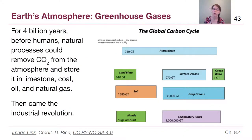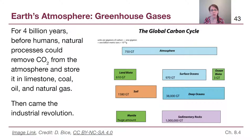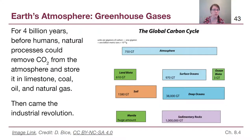For four billion years before humans came along, there were lots of different processes that could emit carbon-containing molecules into the atmosphere and absorb them back out. Carbon can be stored in many locations: the atmosphere, surface and deep oceans, sedimentary rock, the mantle, and soil. The biggest storage of carbon is in limestone, coal, oil, and natural gas — things that are basically holding it in solid form. Then the Industrial Revolution came along, where we suddenly had technologies that needed coal, oil, and natural gas.